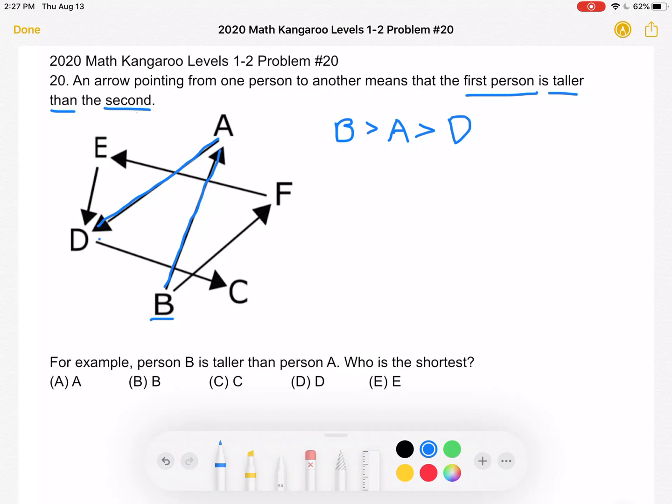Then we have an arrow that goes from D to C, which means that person D is taller than person C. Because again, an arrow pointing from one person to another means that the first person is taller than the second.